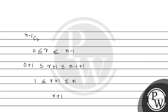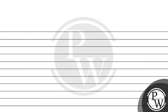Further we can say that (r+1)/n will be greater than or equal to 1/n, but less than or equal to 1. And since 1/n is greater than 0, we can say that (r+1)/n is less than or equal to 1 but greater than 0.